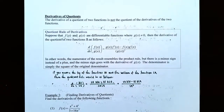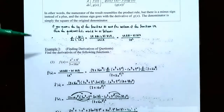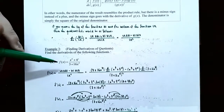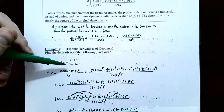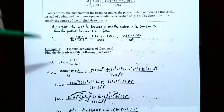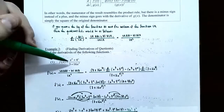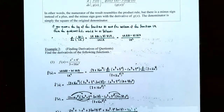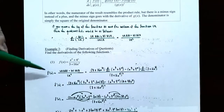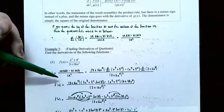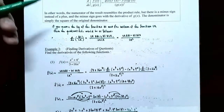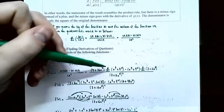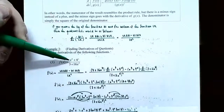Let's look at Example 3, finding derivatives of quotients. Number one: f of x is x to the fourth plus 4 to the x, all divided by 3 plus 16x cubed. Since this is a fraction of two different functions, we need to use the quotient rule. So f prime of x is low d high minus high d low all over low squared. Low is the denominator, 3 plus 16x cubed, times d/dx of the numerator, x to the fourth plus 4 to the x.